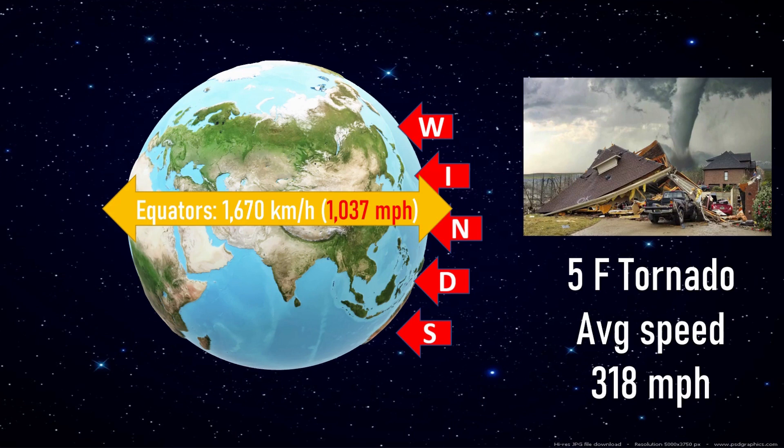For context, the strongest F5 tornadoes have velocities of average 318 miles per hour. These storms can move houses off their foundations, send cars flying, and even tear apart concrete structures. But this is not the only destruction you will see here.